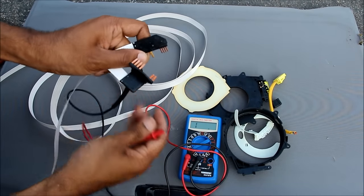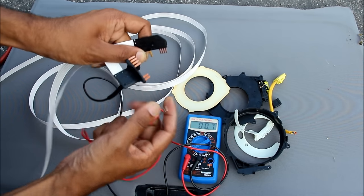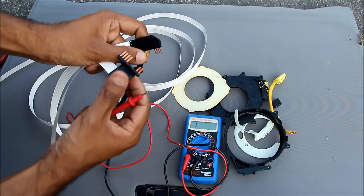You can test the functionality of the ribbon cable in the clock spring by using a multimeter measuring continuity. And just touch that against the two terminals. As you can see those are continuous. That means this ribbon cable is functional.